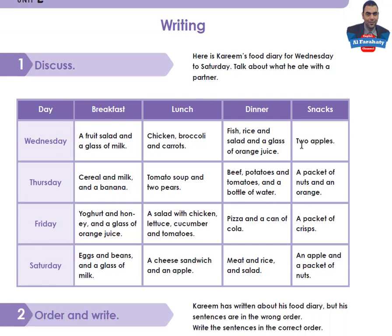Look at this table. This is Kareem's food diary for Wednesday, Thursday, Friday and Saturday. You are asked to talk about it with your partner. Now let me ask you some questions. What did Kareem eat for breakfast on Wednesday? He ate a fruit salad and a glass of milk. What did Kareem eat for lunch on Thursday? He ate tomato soup and two pears. How many servings of fruit did Kareem eat on Wednesday? Did Kareem eat any unhealthy food this week? Try to find the answers.